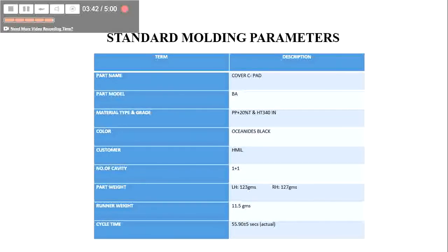The standard mold parameters are displayed as follows. The color is ocean rusk black. There are two cavities and the material is polypropylene. The original cycle time is 55.90, give or take 5 seconds.